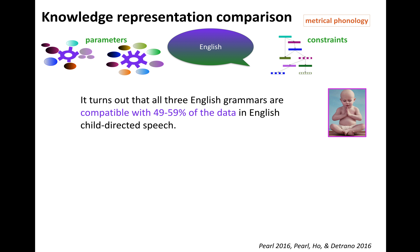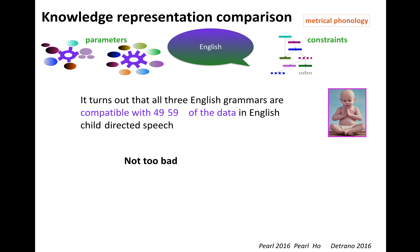It turns out that all three English grammars — that is, the grammars for both this parametric representation and this parametric representation, as well as the best performing English grammar in the constraint ranking representation — are compatible with about 49 to 59% of the data in English child-directed speech. So this is pretty good, actually.